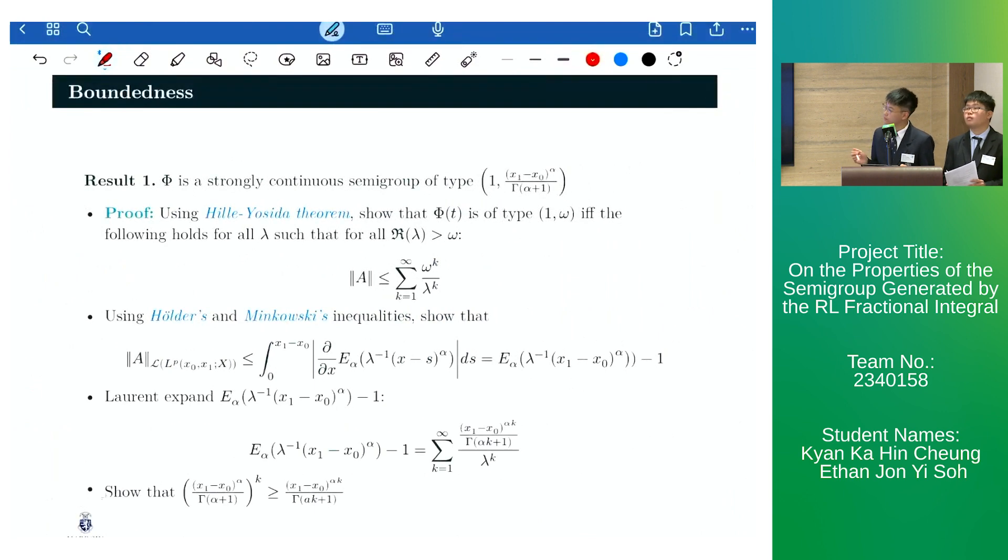Our next result is regarding the boundedness of phi and states that phi is a strongly continuous semigroup of the following type. We obtain this result by using the Hille-Yosida theorem to show that phi is of type 1 omega, if and only if the operator norm of A, as defined before, is bounded above by this geometric sum.